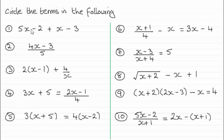So with question one, you should find you have got four terms. Those terms are the 5x, the minus 2, the plus x, and the minus 3. You've got 2x terms and 2 constants.